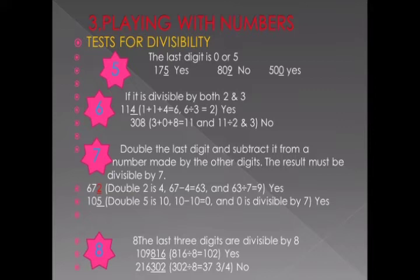For divisibility of 5: the last digit should be 0 or 5. If the last digit is 0 or 5, it is divisible by 5. For divisibility of 6: a number is divisible by 6 if it is divisible by both 2 and 3. That means you need to check divisibility by 2 and divisibility by 3 both.